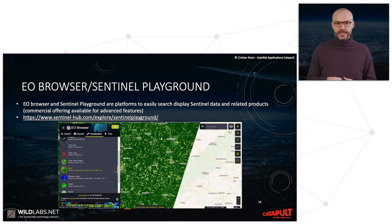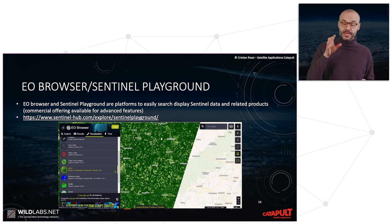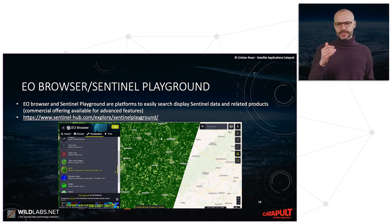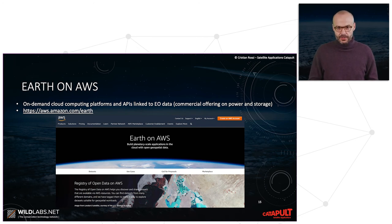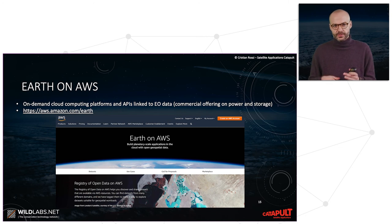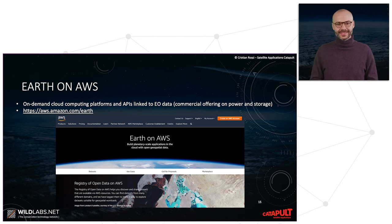Basic features of EO Browser and Sentinel Playground can be accessed for free, including NDVI maps, moisture maps, and so on. Another partially public product is Earth on AWS — an on-demand cloud computing platform with several APIs linked to Earth Observation data.